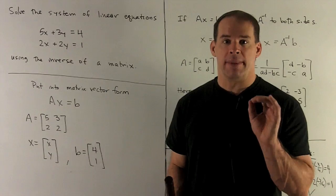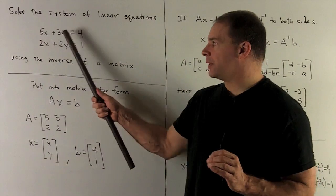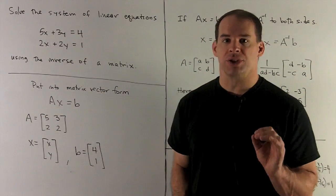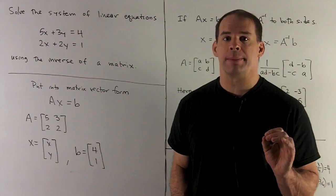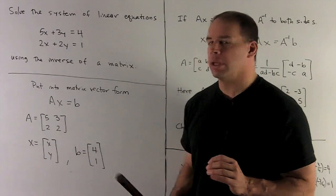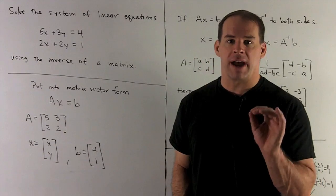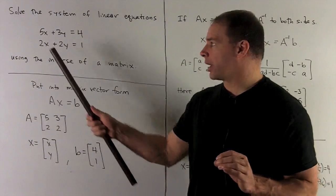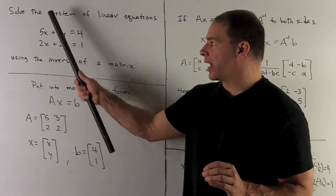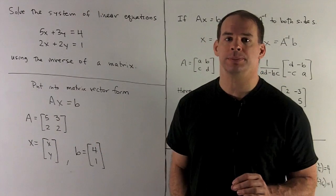We get our matrix A by taking the coefficients off of the equations on the left hand side. So we'll have 5, 3, 2, and 2. Note this only works if things are organized with the x stuff in one column and the y stuff in the next column.